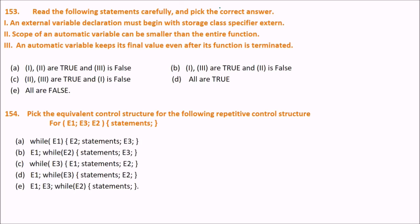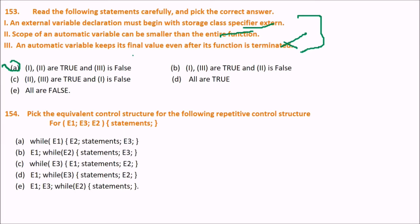Read the statements about storage class variables carefully. The answer is A: statements one and two are true. An external variable declaration must begin with the storage class specifier 'extern', and the scope of an automatic variable can be smaller than the entire function. Statement three is false — an automatic variable does not keep its value after the function terminates.